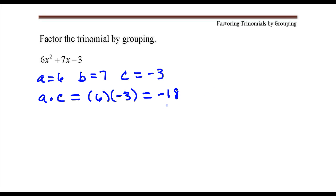Now, we need to find two numbers whose product is negative 18, but whose sum is positive 7. Those two numbers would be 9 and negative 2. If you want to check that: 9 times negative 2 is negative 18, and 9 plus negative 2 is positive 7.